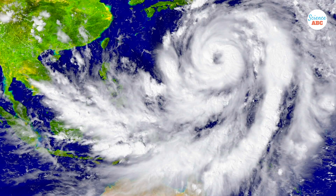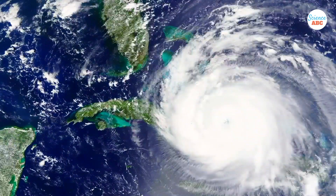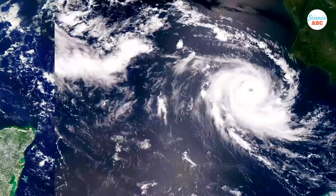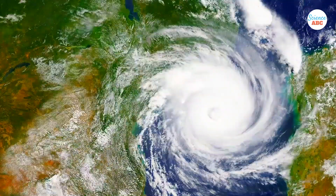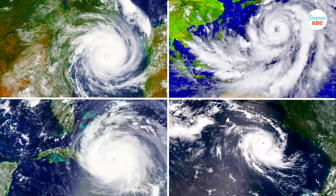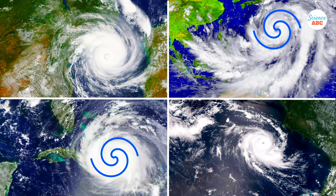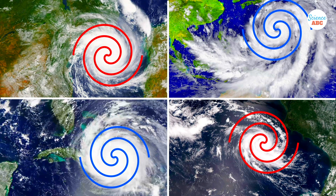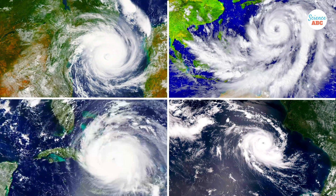Take a close look at these photos of hurricanes and cyclones. Do you see the similarities? Or rather, do you see any differences? To the untrained eye, all these images may look nearly identical. But if you look closely, you'll notice that some of these have the hurricanes spinning in the clockwise direction, while others show the storm spinning counterclockwise. So what's that all about?